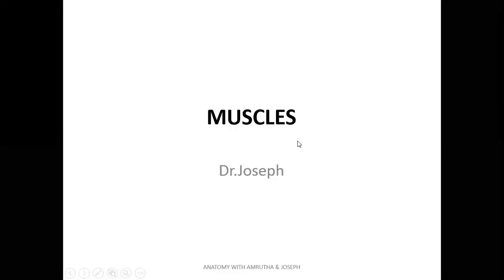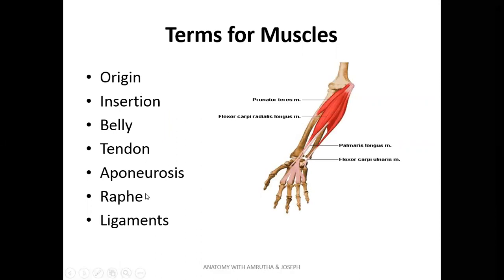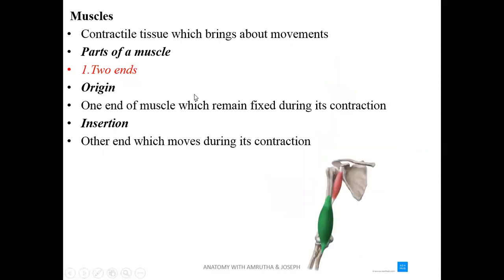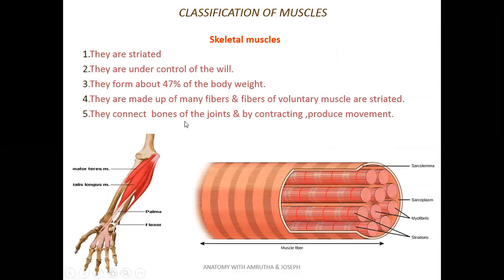Welcome, dear students. Today we'll be talking about muscles. The word muscle is derived from the Latin term 'mus,' meaning mouse, since the muscle looks like a mouse. These terms are explained in my previous introductory classes on medical anatomy and tissues. Coming to the classification of muscle, we have skeletal muscles, cardiac muscle, and smooth muscle. Let's go straight to the skeletal muscle.